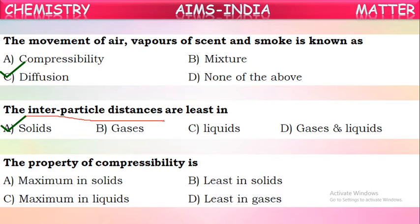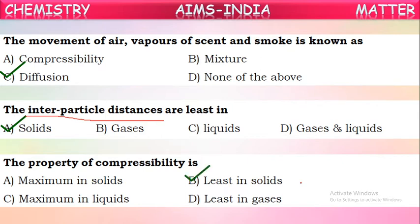Question 10: The property of compressibility. In solids, molecules are very tightly packed, so compressibility is highly difficult — compressibility is least in solids. In gases, inter-particles are very loosely packed and far apart, so they can be compressed very easily — compressibility is maximum in gases. So the correct statement is: compressibility is least in solids.